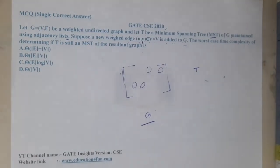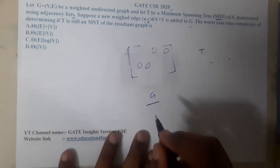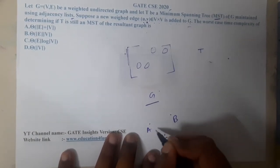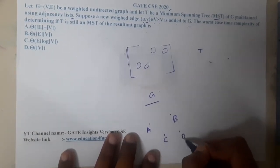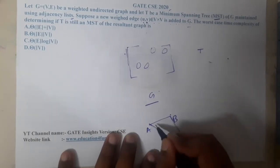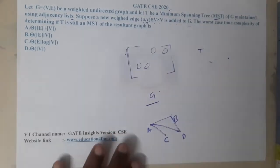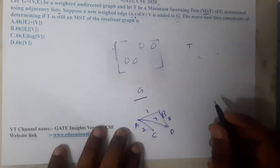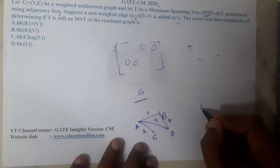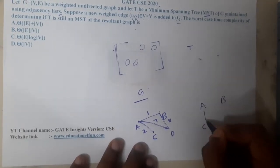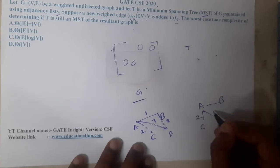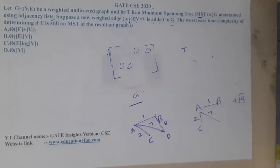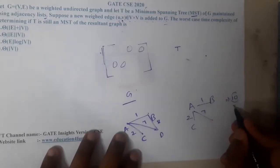Let us take a small example. Assume this is our original graph with edge weights 1, 2, 7, and 8. The minimum spanning tree for this graph would look like: 2 + 7 + 1 = 10. So the MST has a total cost of 10.